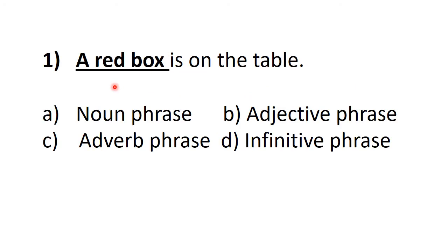The first one is: a red box is on the table. Here a red box is an underlined phrase and you have four options: noun phrase, adjective phrase, adverb phrase and infinitive phrase.